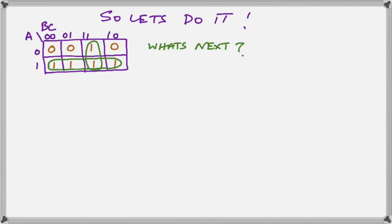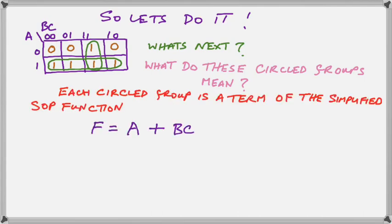So let's do that. We've circled them here in the green. And now, what do we do with those circles? What do the circle groups actually mean?